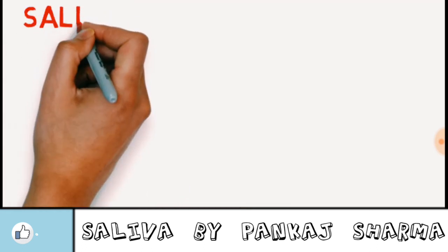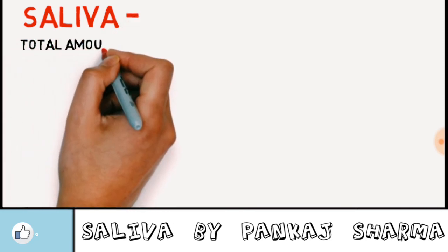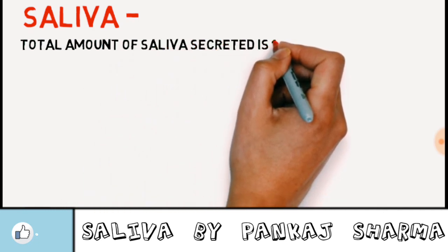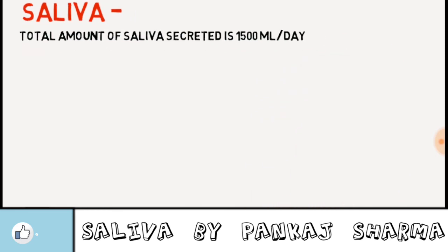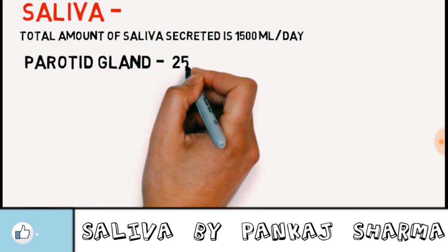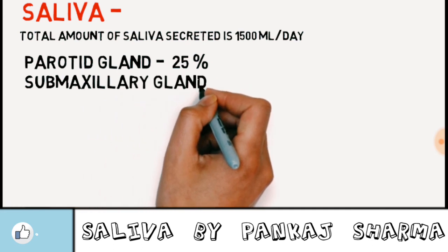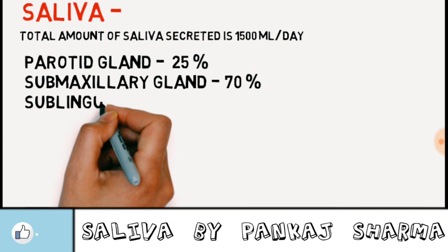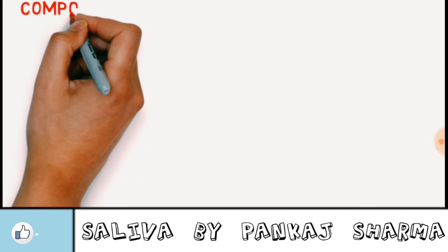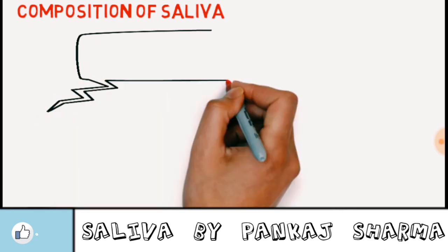Hi friends, today we will be discussing about saliva. The total amount of saliva secreted is 1500 ml per day, in which the parotid gland secretes 25%, the submaxillary gland secretes 70%, and the sublingual gland secretes 5%. Now let's look at the composition of saliva.